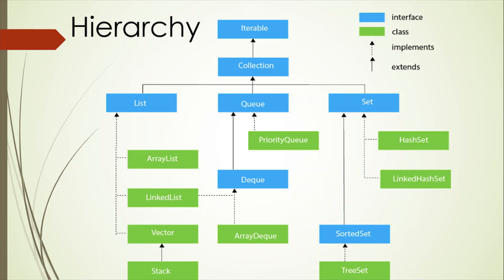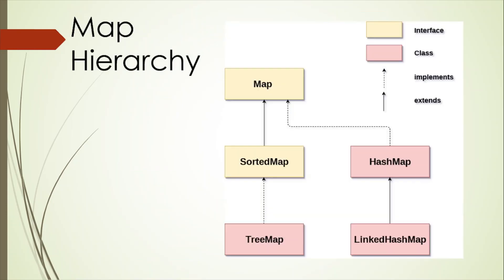For Queue, we have PriorityQueue as its implementation. We also have a Deque interface which extends Queue, and Deque has an implementation of ArrayDeque. For the Set interface, there are different implementations and one extending interface. Under implementations, we have HashSet and LinkedHashSet. For sorted data, we have the SortedSet interface, which has an implementation of TreeSet. Although the Map interface does not extend the Collection interface — as it is not compatible with Collections — Map is a data structure that supports key-value pair mapping and does not support duplicate keys. Still, it is considered part of Collections. The Map interface is implemented by HashMap, LinkedHashMap, and TreeMap. Since all subclasses implement Map, we can instantiate a Map object with any of these classes.